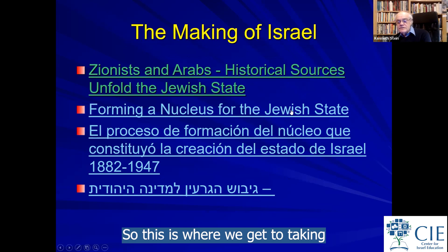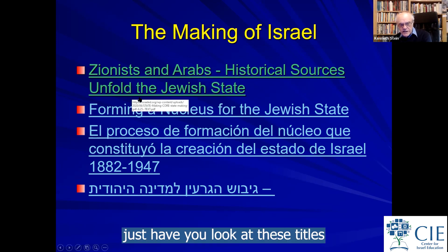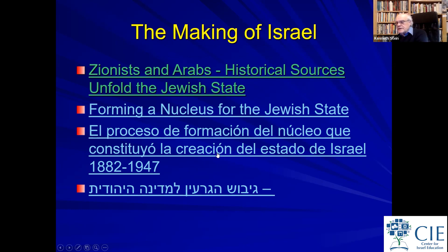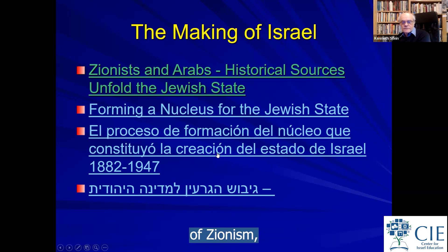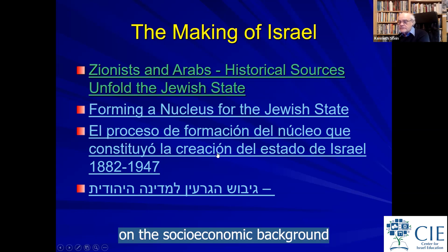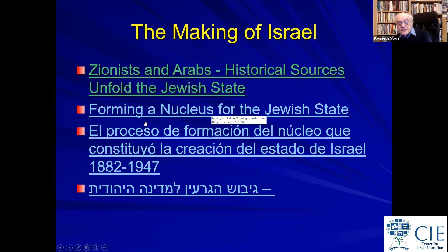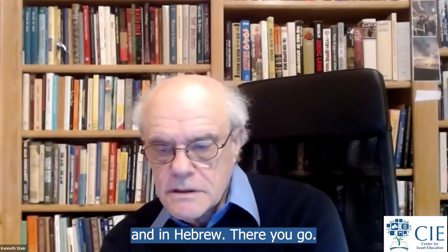This is where we get to looking at the website. I'd like you to look at these titles and absorb them for a moment. The first is a series of short paragraphs focusing on the intellectual origins of Zionism and the socioeconomic backgrounds of what happens between the 1880s and the present. The second is 'Forming a Nucleus for a Jewish State,' also available in Spanish and Hebrew.